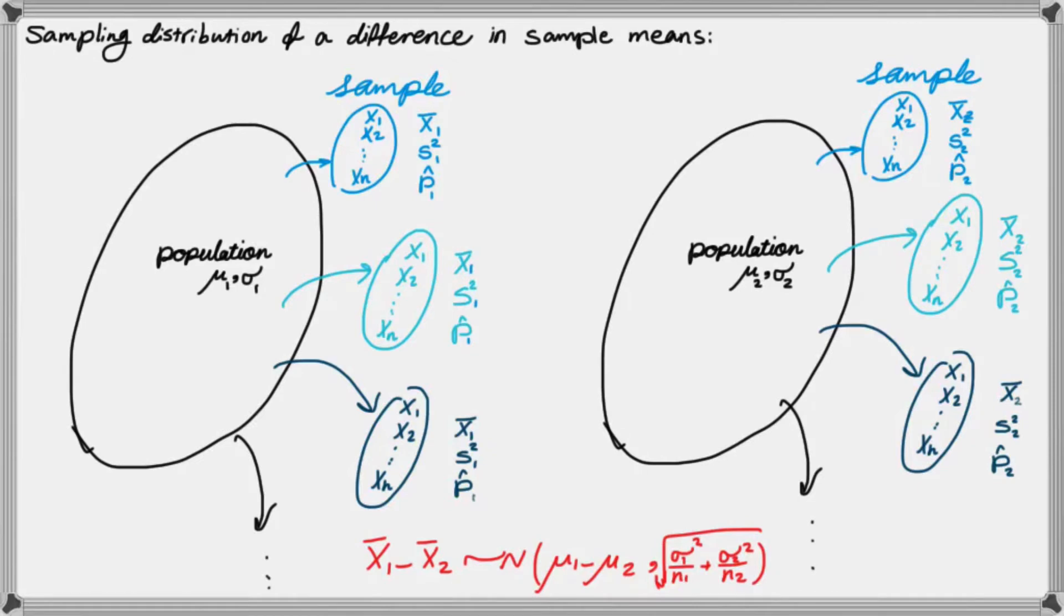And if I do so, I see that this is normally distributed, and its average is the average of first population minus second population. And standard deviation is σ₁² divided by n₁ plus σ₂² over n₂ and the square root of this whole term, as it's shown on the screen. So this time, we're interested in the distribution of a difference between sample averages. So in this case, this is the distribution that you're going to see. And this is a very important observation because it allows you to use this characteristic for setting up confidence interval